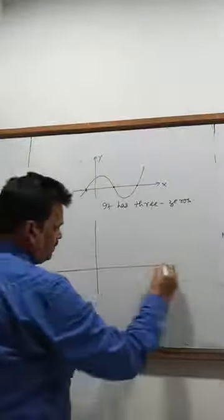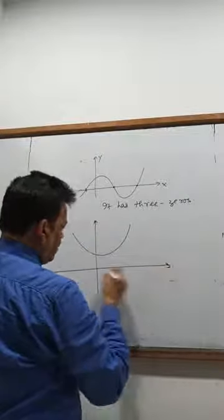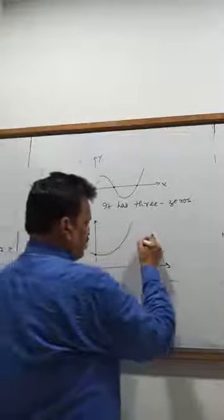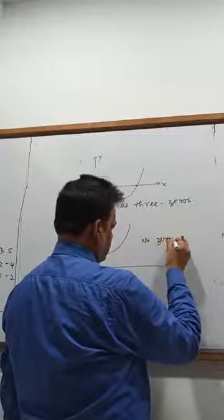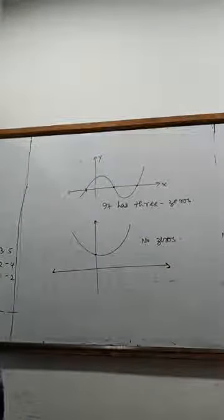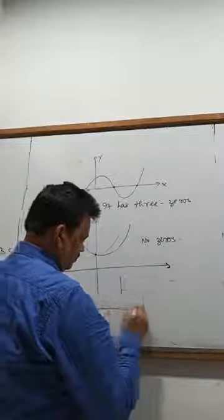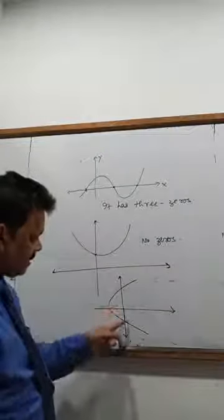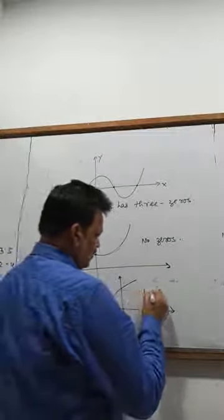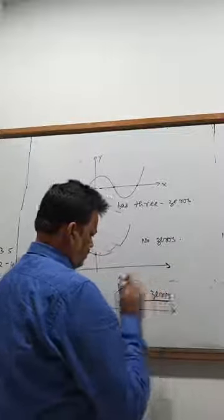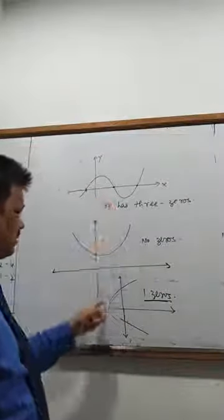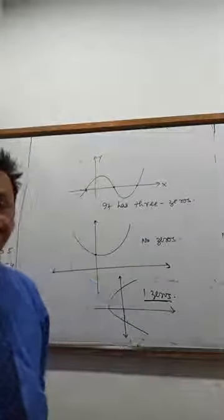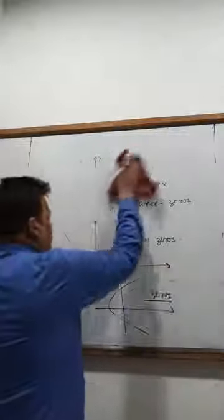Suppose I take one more — how many zeros does it have? It is cutting the y-axis, not the x-axis, so no zeros — no values of x. You can also see: cutting the x-axis at 1 place means 1 zero. So zeros means how many places the curve is cutting your x-axis. This is the graphical method to find zeros of the polynomial.